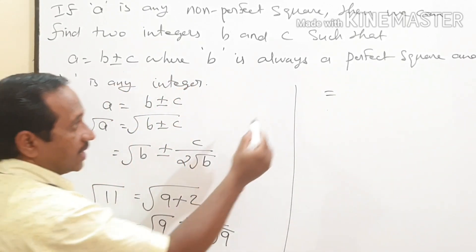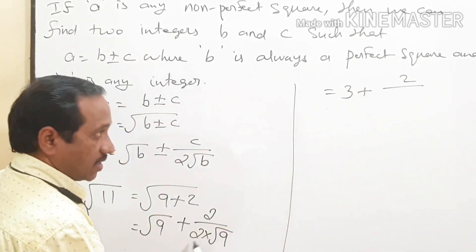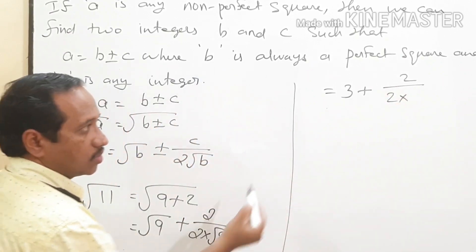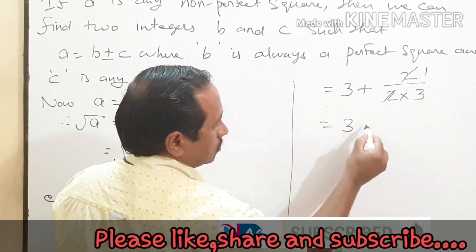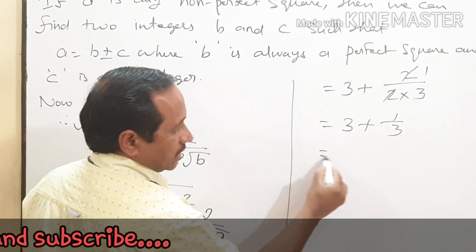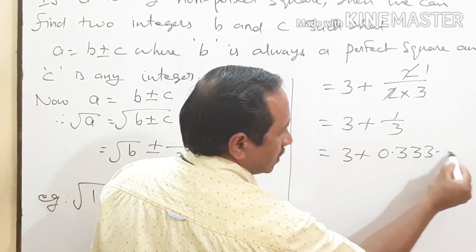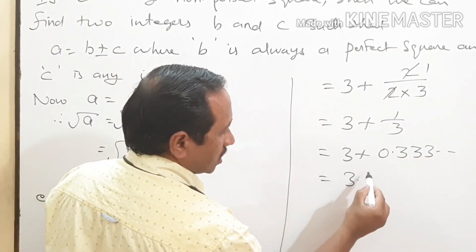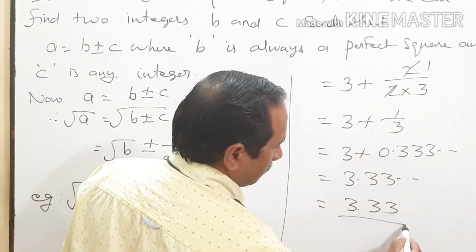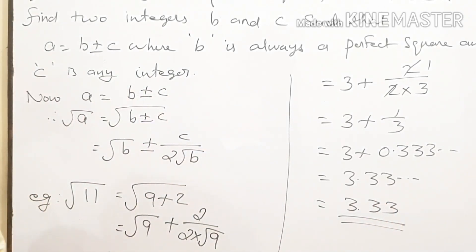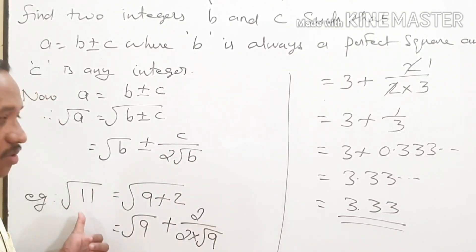That is equal to root of 9, which is 3, plus 2 divided by 2 into root of 9, which is 3. The 2 and 2 will get cancelled, giving 1. So it is equal to 3 plus 1 by 3, which is 3 plus 0.333, etc. So it is equal to 3.333, and we will fix it as 3.33. See, without the long division method, we got the value of the square root of 11.